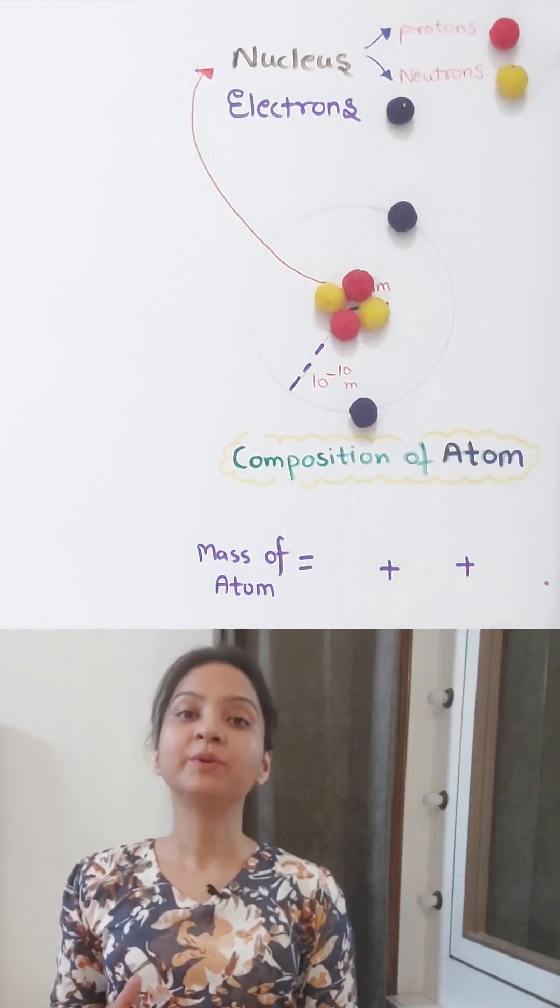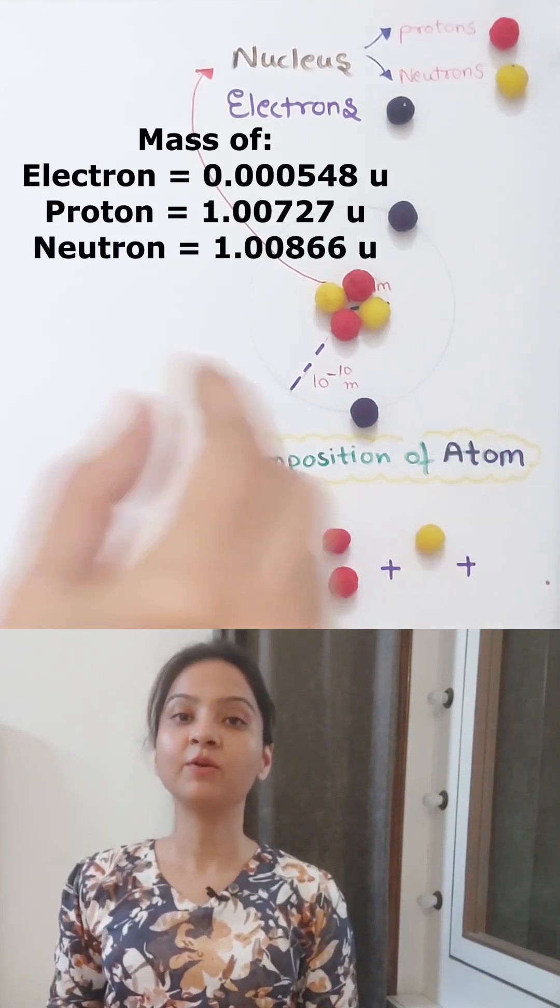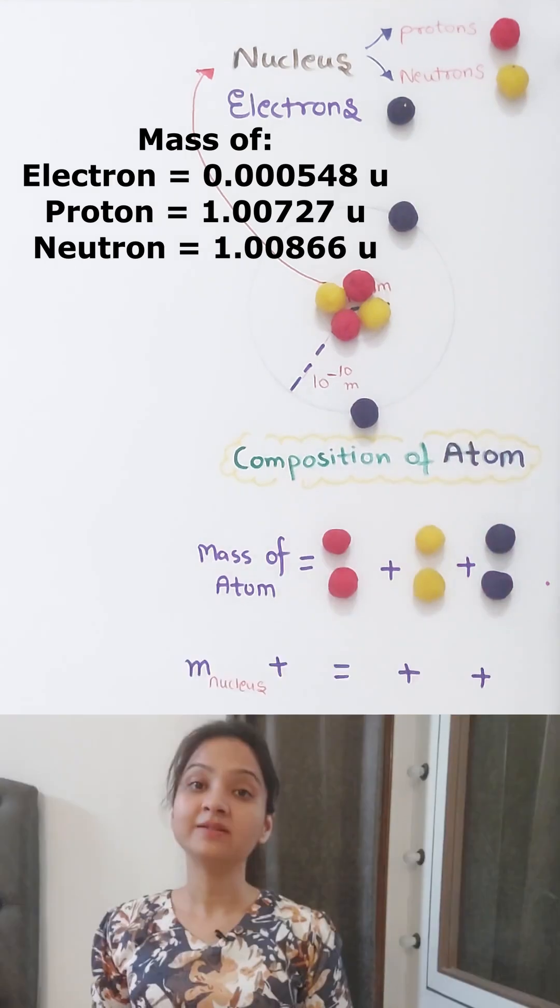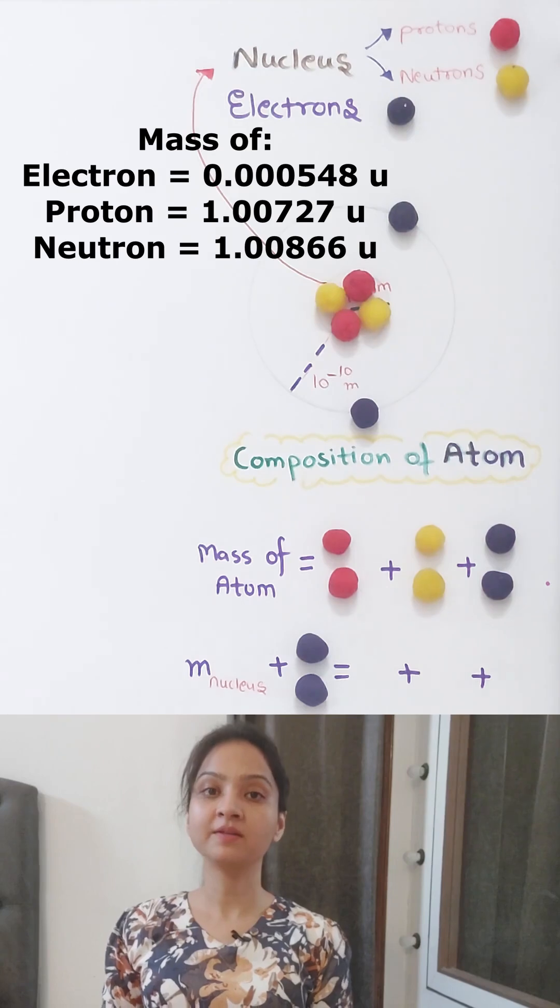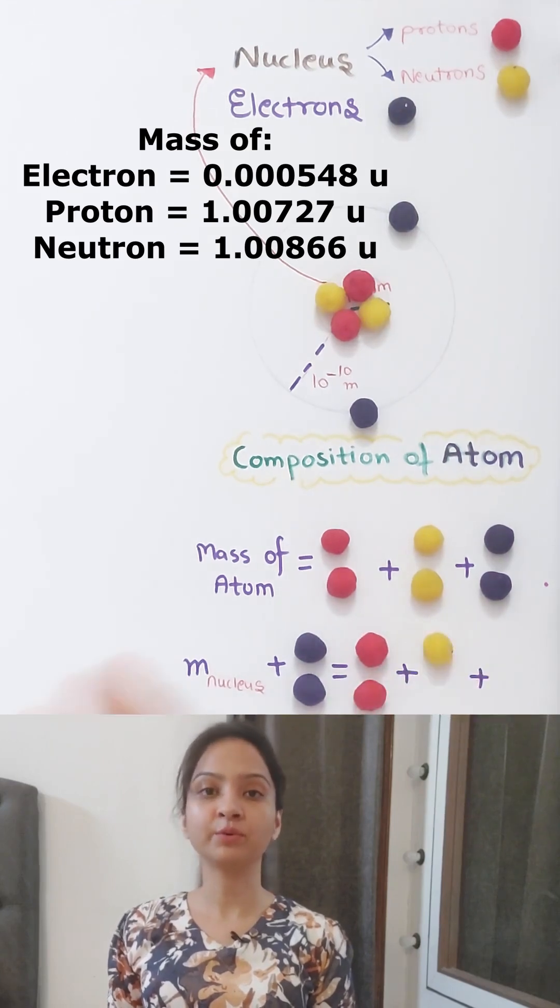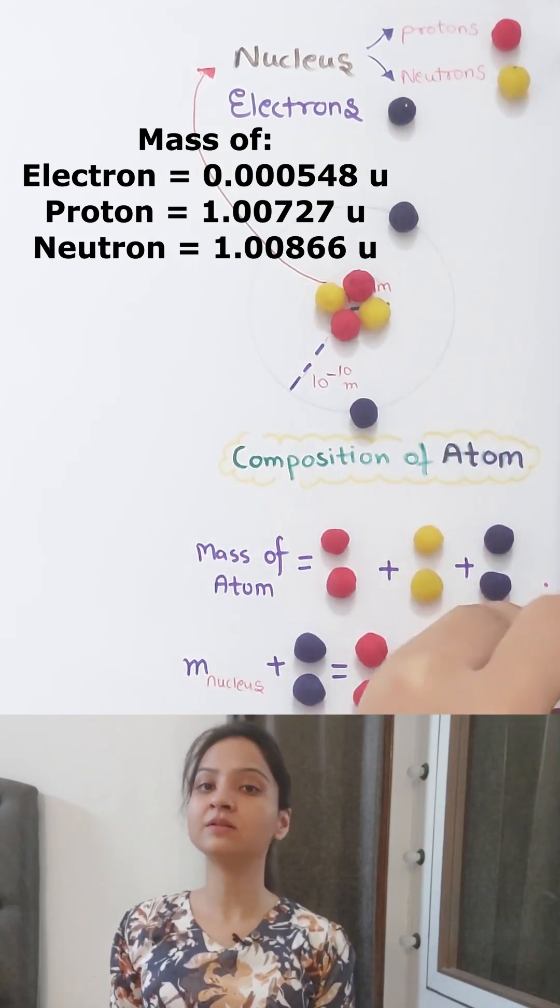So mass of an atom should be equal to the sum of the masses of the constituent particles. That is, the mass of the nucleus plus the mass of surrounding electrons should be equal to the masses of the number of neutrons and protons present in the nucleus plus the surrounding electrons.